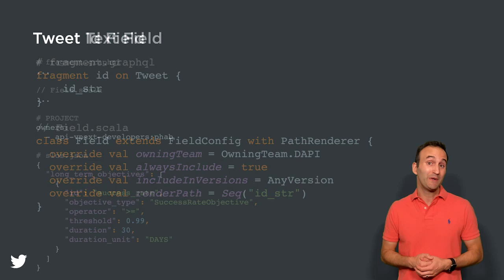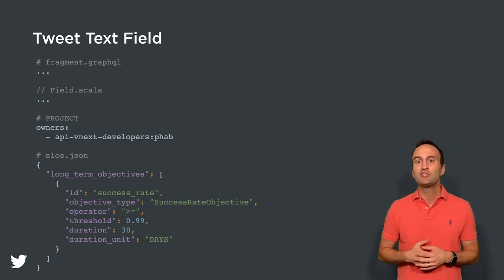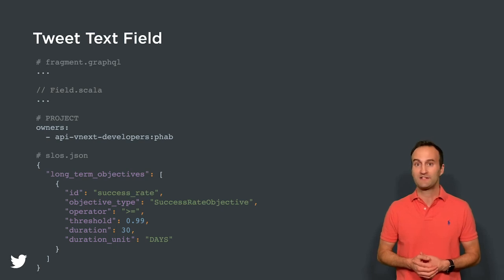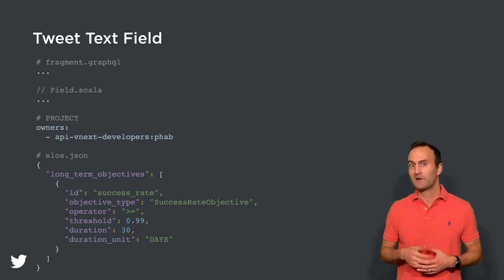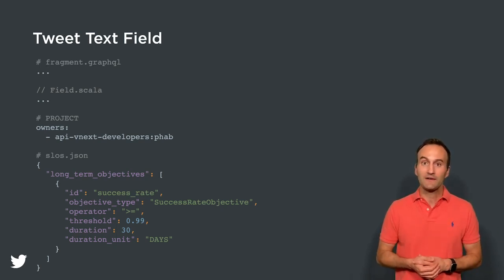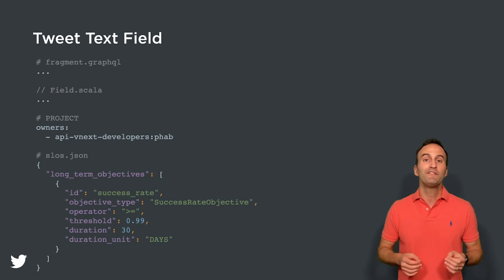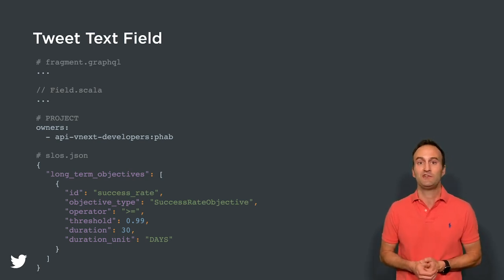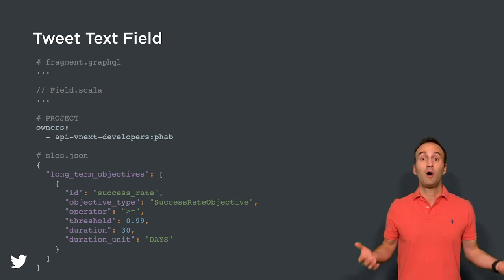Next, let's look at how we define the tweet.text field. Since the GraphQL and Scala files will look almost identical to the tweet.id field, let's focus on the two additional files that are present. The first is a project file, which allows different directories in Twitter's monorepo to be owned by different teams — in this case, indicating that the tweet.text field is owned by the API vNext developers group in Fabricator, which is the system where Twitter performs its code reviews. By specifying this project-level ownership, Fabricator will ensure that all changes to this directory have a ship-it from at least one member of the owning team. The second file is a slos.json file where the field owner can define a service level objective for retrieving and rendering this individual field — for this example, a 30-day rolling success rate objective of 99%. Note that this file is optional; if it's not present, a default API-wide SLO will be used.